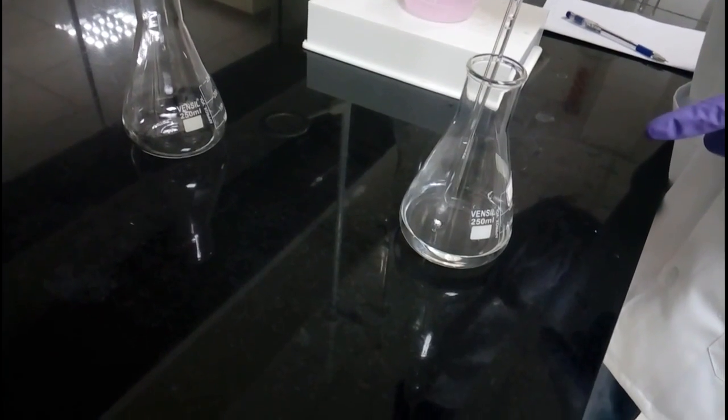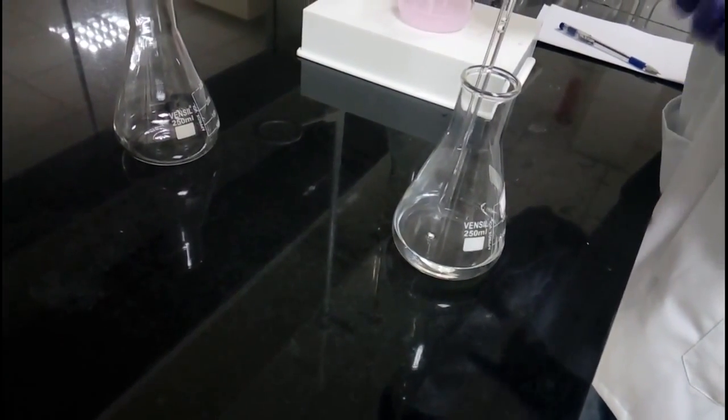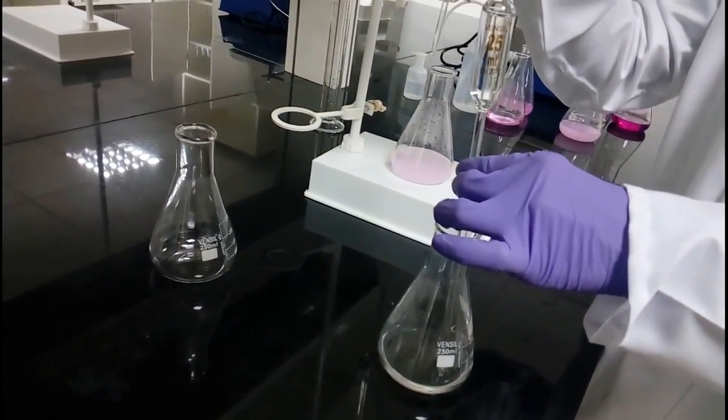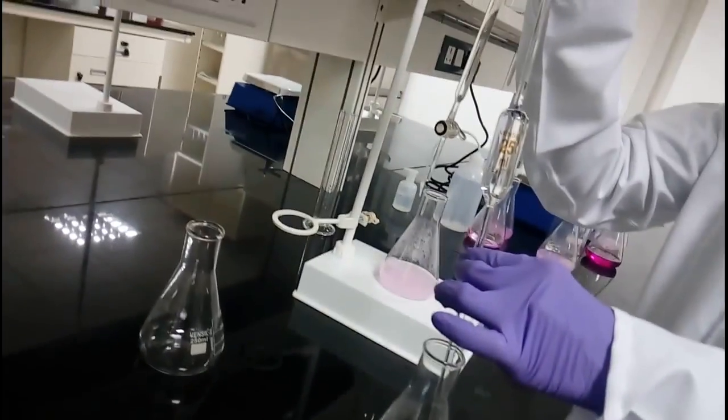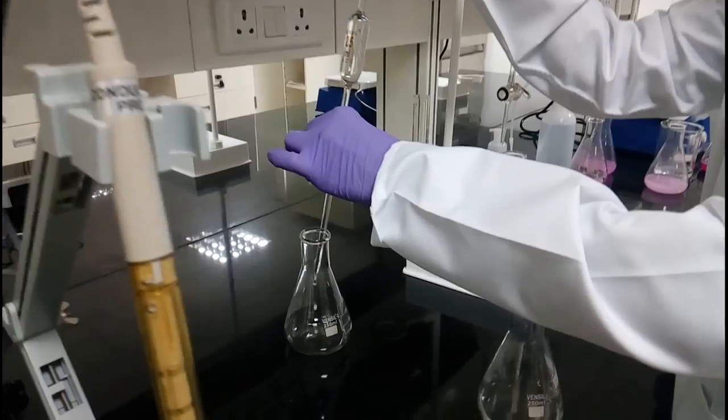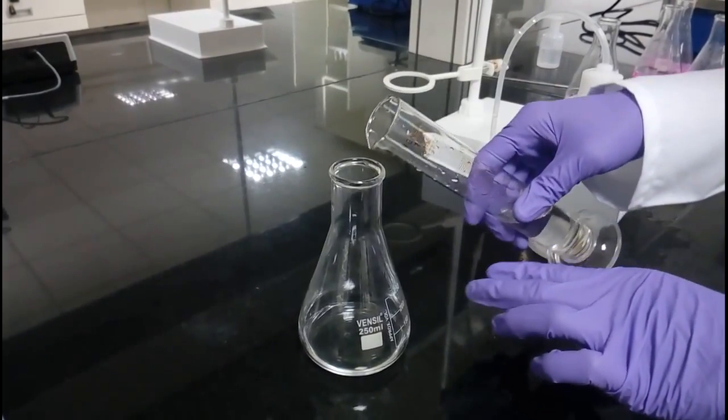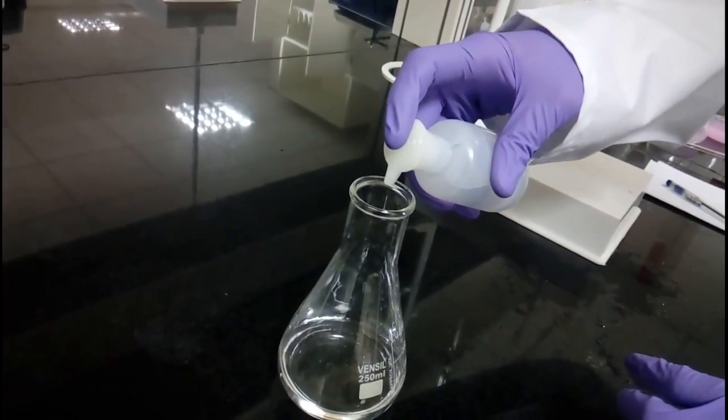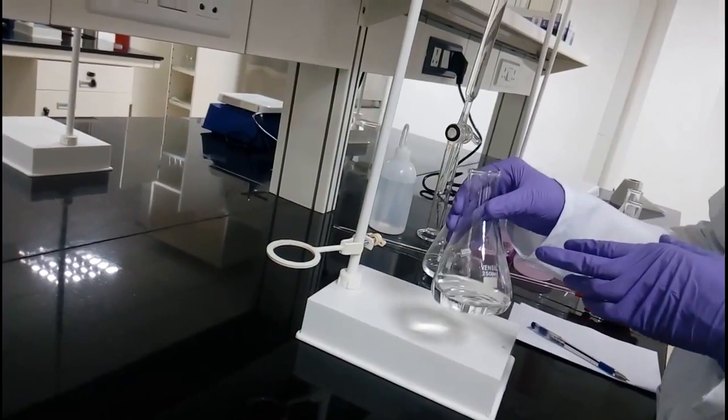We will titrate hydrochloric acid without tablet as a blank. Add 25 ml of 0.1 normal HCl into a 250 ml conical flask. Add 50 ml of water to the conical flask, add phenolphthalein indicator, and titrate with 0.1 normal NaOH.